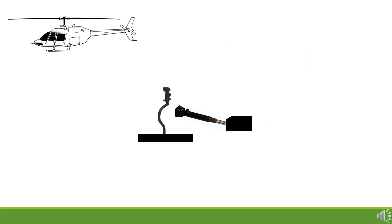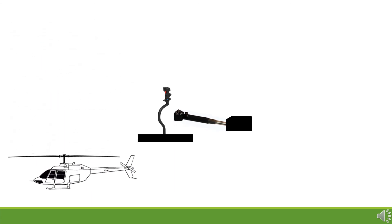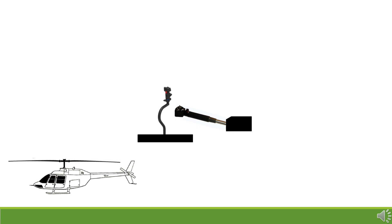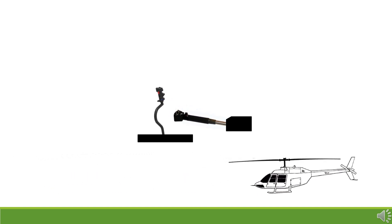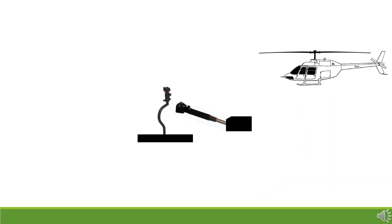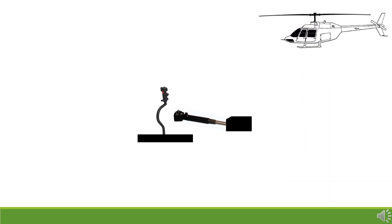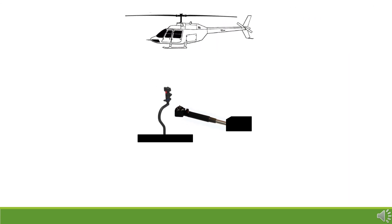This same use of the cyclic and collective can cause the helicopter to move in any direction. Coupled with the anti-torque system, the helicopter has a wide range of motions not possible in a traditional fixed-wing aircraft. All the controls need to be carefully coordinated to make steady flight possible. It is this constant requirement for careful coordination which makes flying a helicopter difficult, at least in the beginning — and then, of course, there's learning how to hover, but that is another matter.